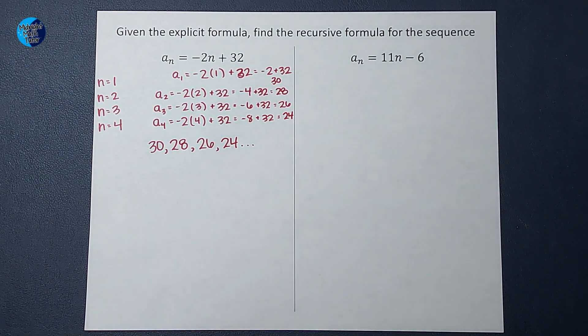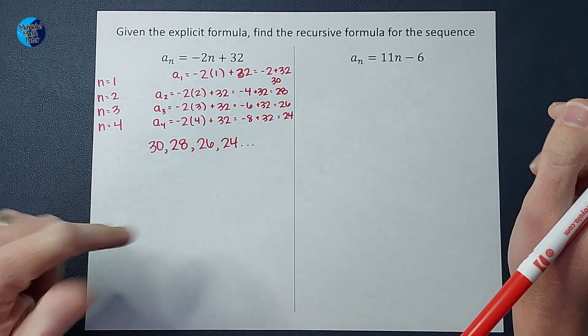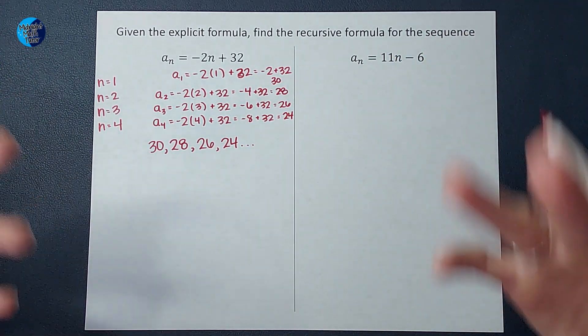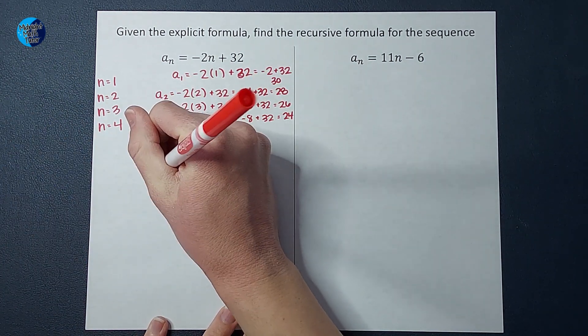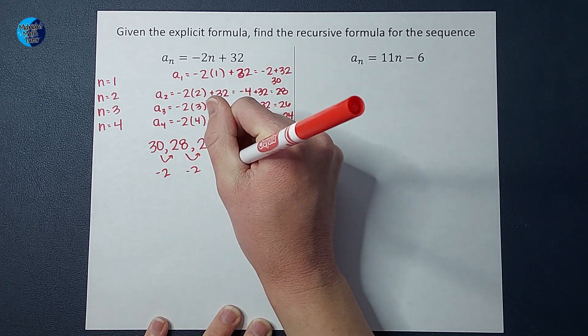But what I need to know in order to do my recursive formula is I need to know the first number of my sequence, check, and I need to know what is being added or subtracted or whatever in this sequence. So now that I figured those out, I know that we are subtracting two each time, right?